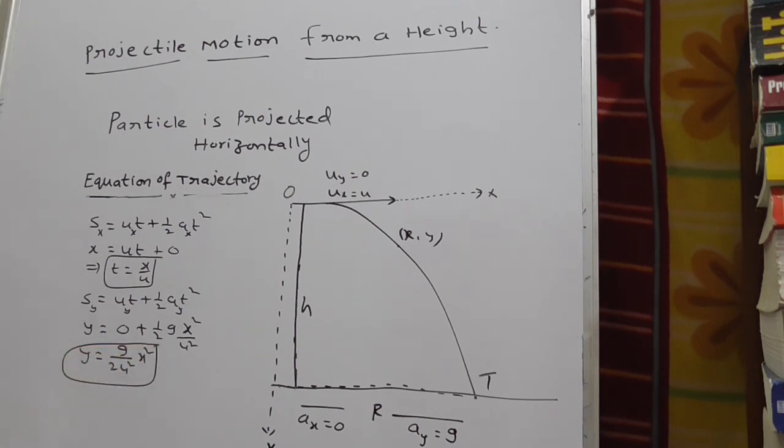Clearly observe, this g by 2u squared is a constant. g is a constant, 2u squared is also a constant. This is a constant. Therefore, this represent x squared is equal to y. All x squared is equal to y represent parabolic equations.